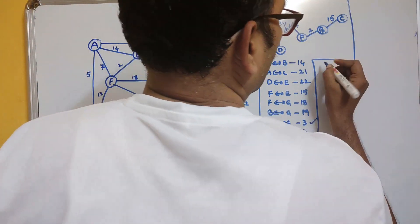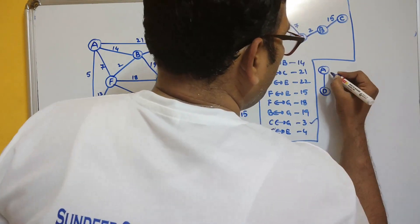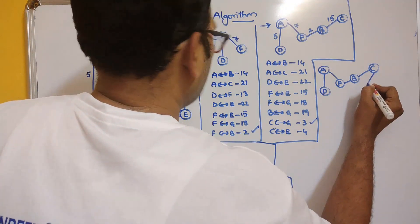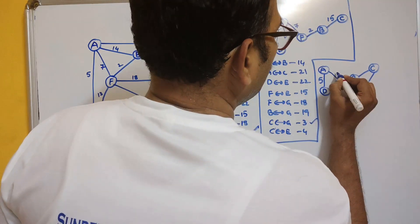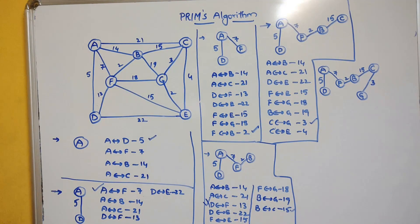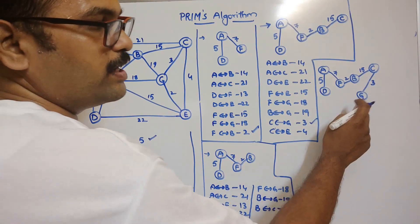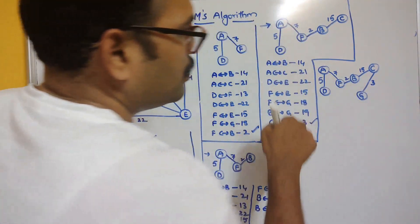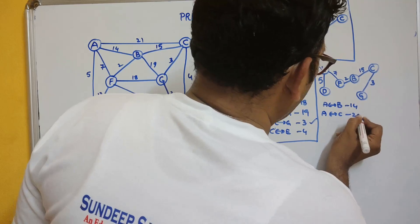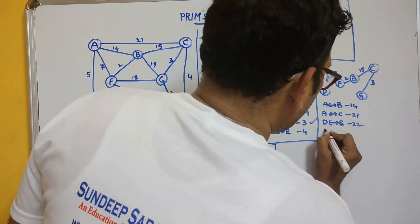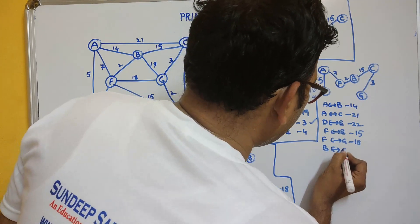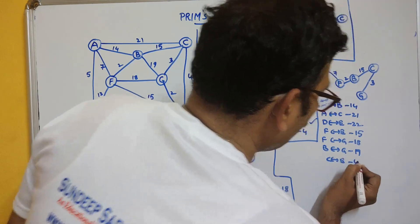The tree now has vertices A, D, F, B, C, and G with edge costs 5, 7, 2, 15, and 3. The remaining edges are: A to B with 14, A to C with 21, D to E with 22, F to E with 15, F to G with 18, B to G with 19, C to E with 4.